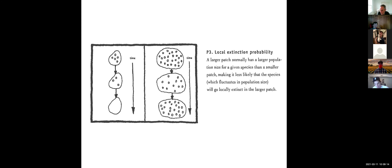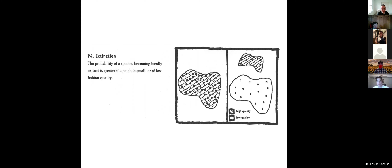In larger patches, because a larger population is supported, as the population size fluctuates over time you're less likely to have a localized extinction event. Larger or higher quality patches will have better stability in terms of wildlife population as opposed to smaller or lower quality patches.